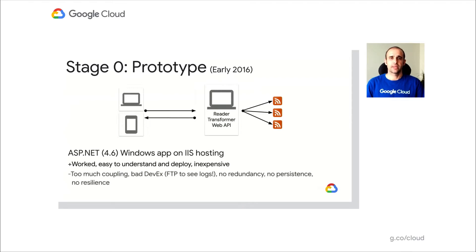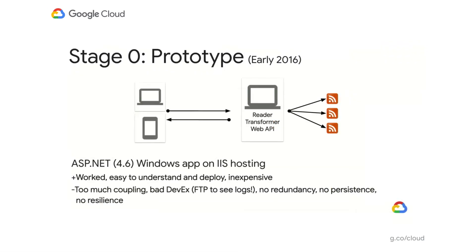At the same time, the app had issues from the beginning. First of all, there was too much coupling between services — all three services were bundled together. The developer experience of the IIS host was not great. Sometimes the machine where our application was running would go down and we wouldn't know why. Or if we had to look at the logs, I had to FTP into the machine and download the logs. We didn't have any kind of redundancy, persistence, or resilience, so any issues with any of the services could potentially bring down our whole application.